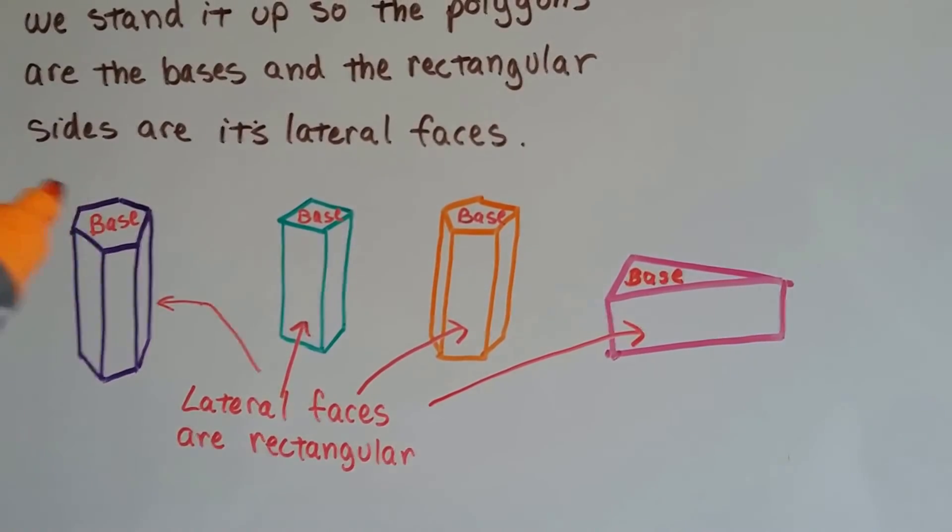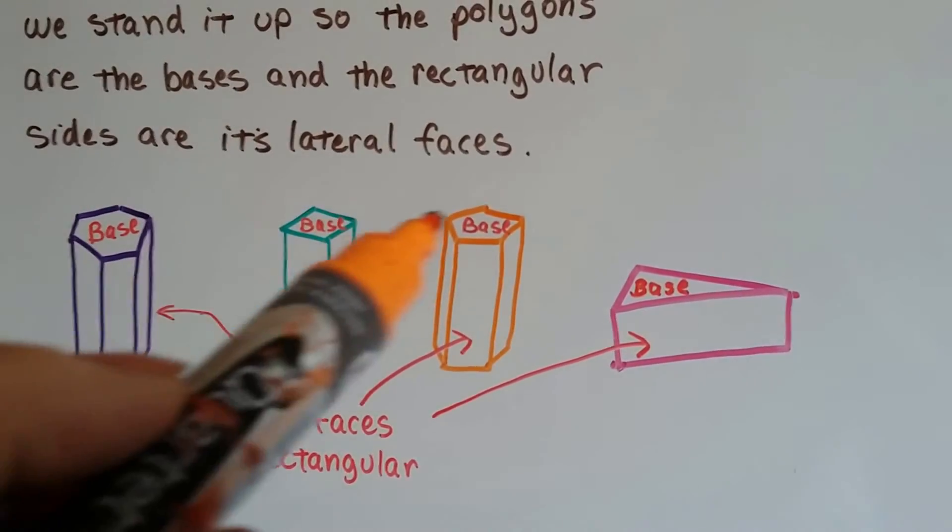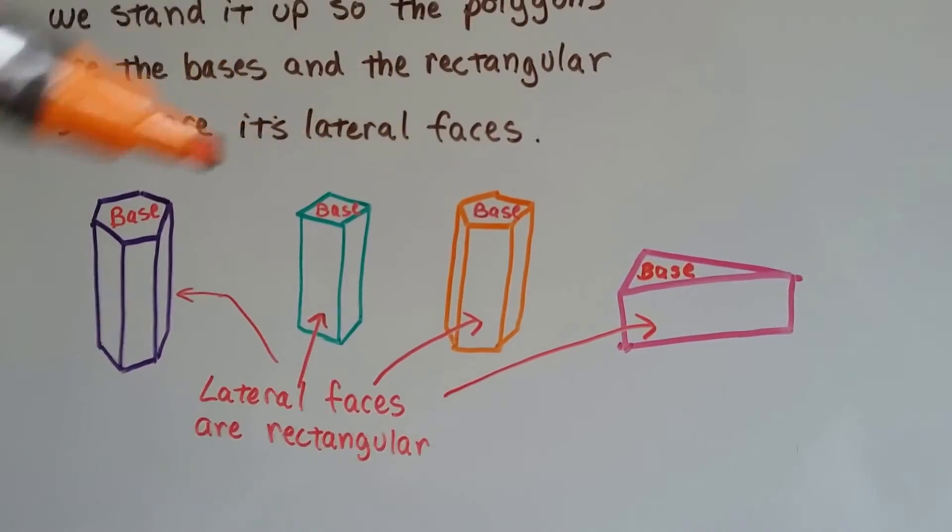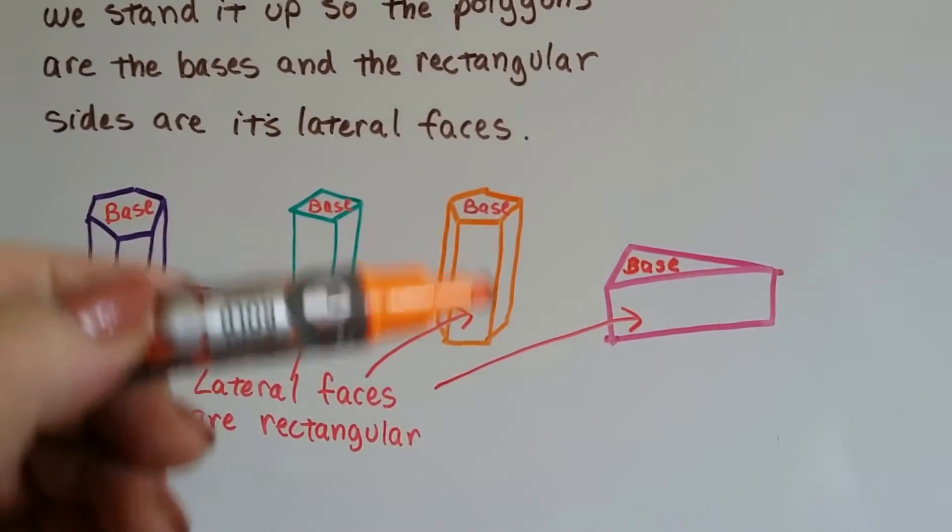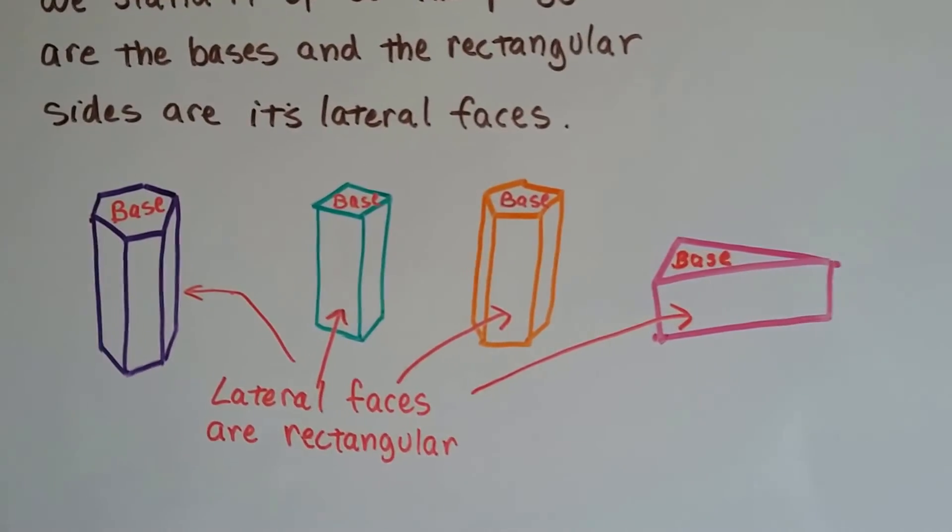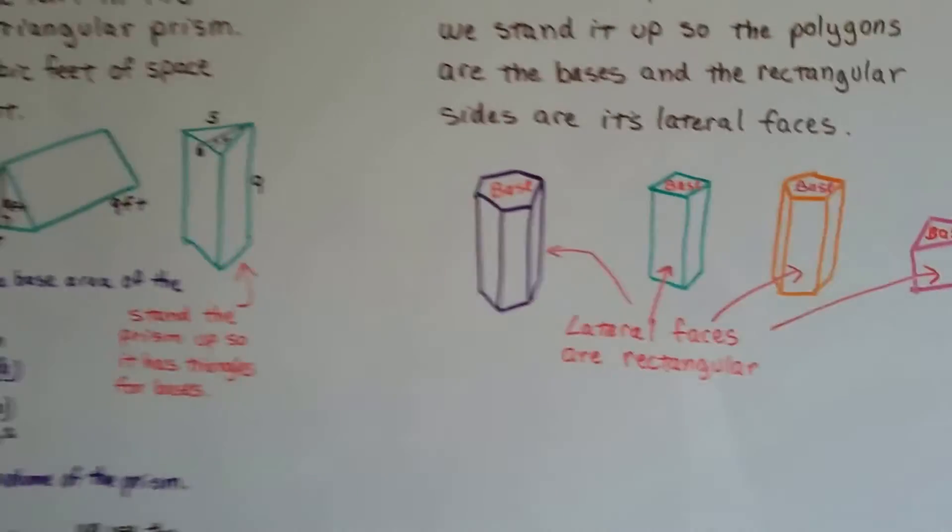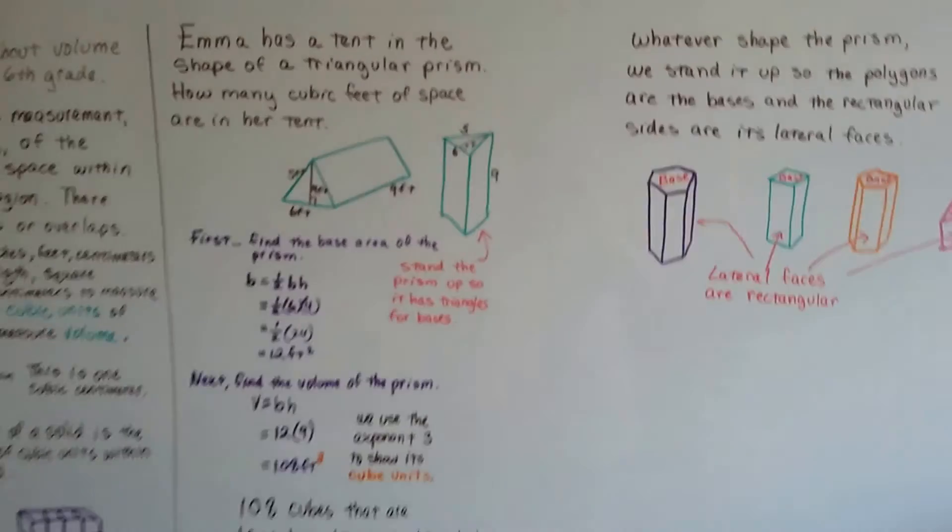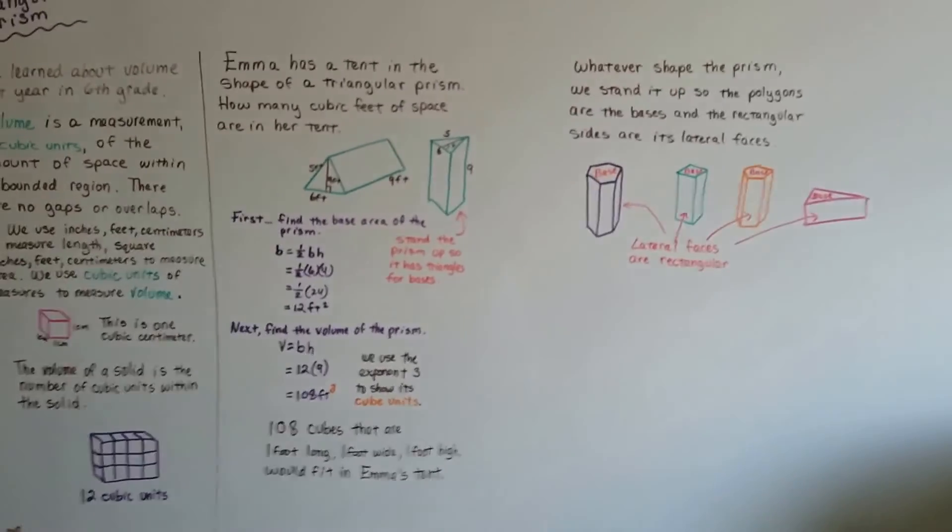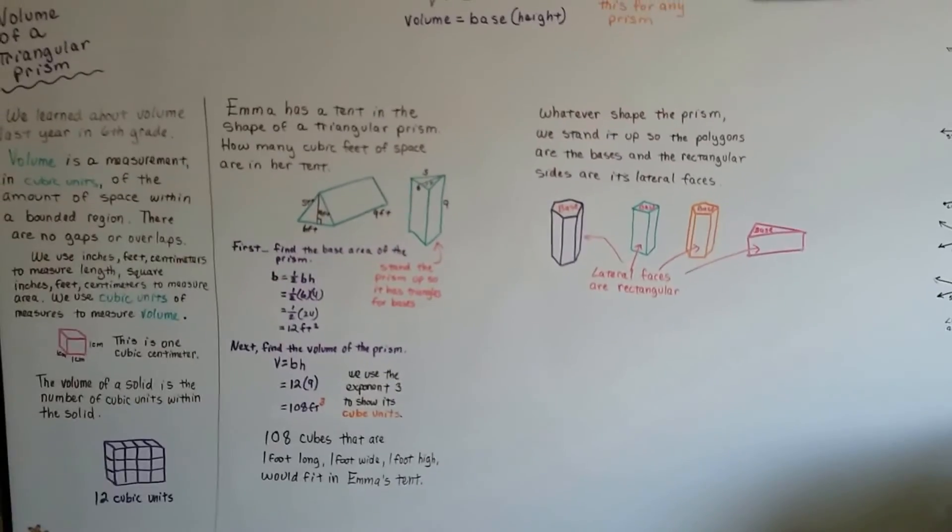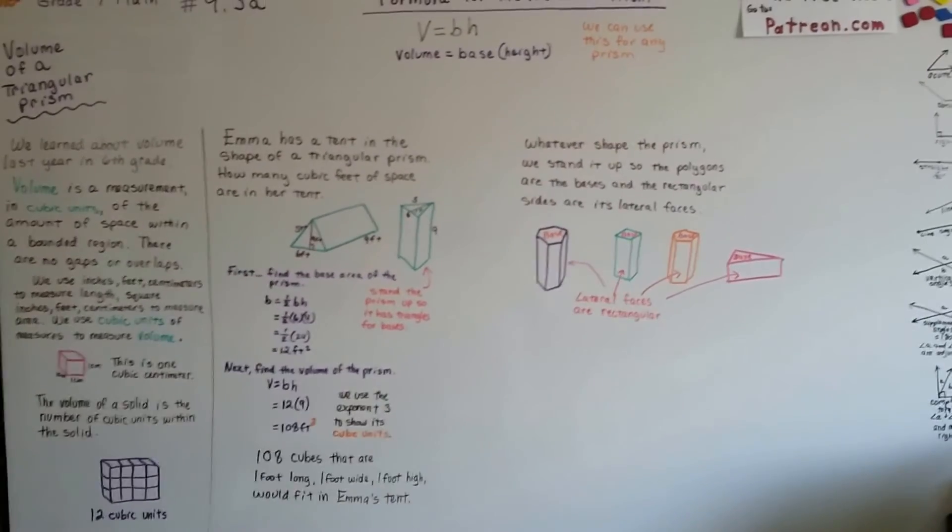Whatever the shape, if it's a hexagon, a square, a pentagon, those are the bases. And these long rectangles are the lateral faces. So just remember that when you're doing your volume formula. And you say, well, what's the base? Well, what's the shape of the polygon? That's the base.